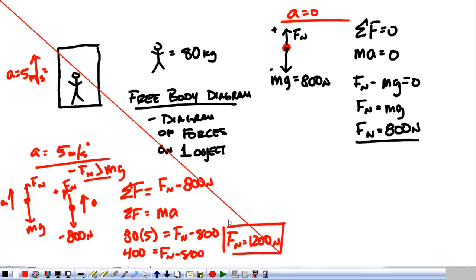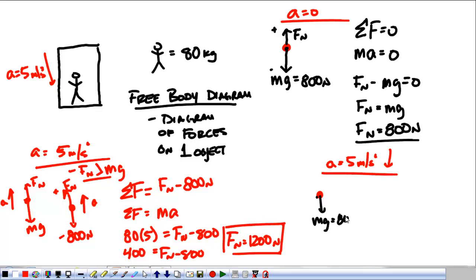That is bigger than the weight. That's what we wanted. Last case that we're going to do with this. The last thing that we're going to do is take and flip over the direction of our acceleration. Now, it's going to be 5 meters per second squared, but it's down. We have the weight, mg, that's 800. We have the normal force, which is up, and our acceleration, which is down.